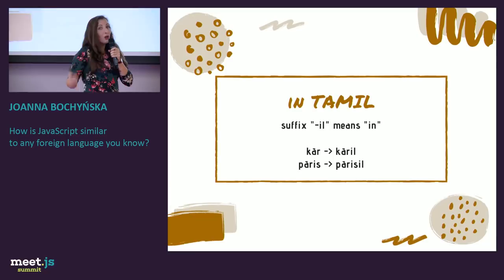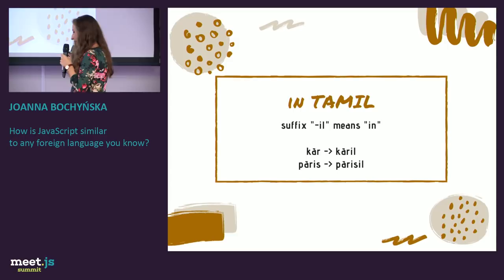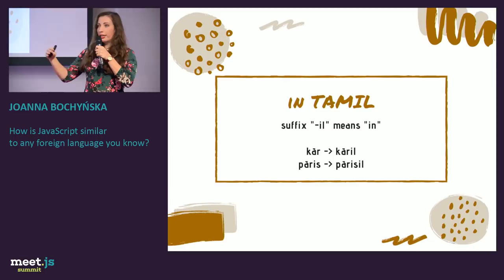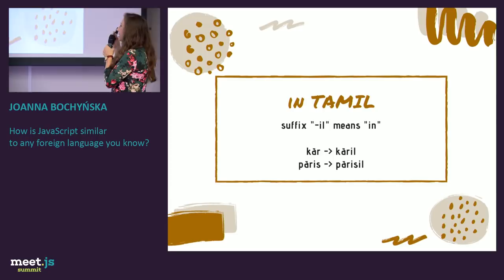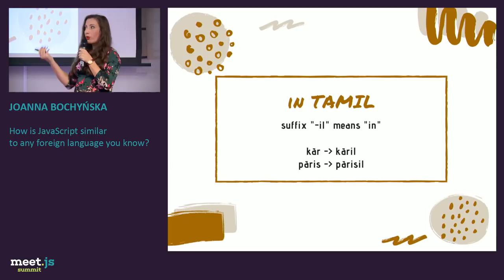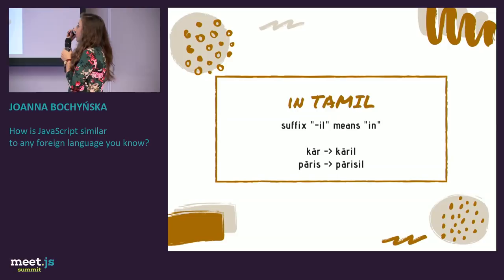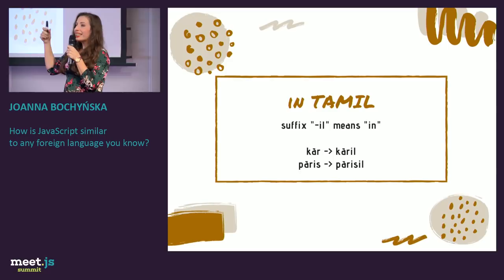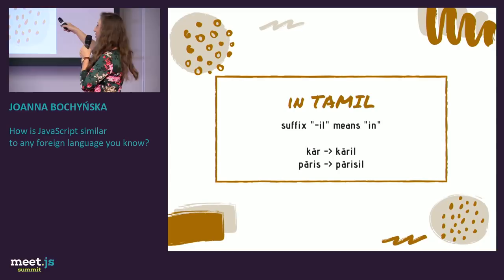The first example is from Tamil, a language from southern India — you may recall Tamil Tigers. In Tamil, we have suffixes, and when you add a suffix to a word, it changes its meaning. The suffix 'il' means 'in' when added to a word. So 'karil' means 'in car.'